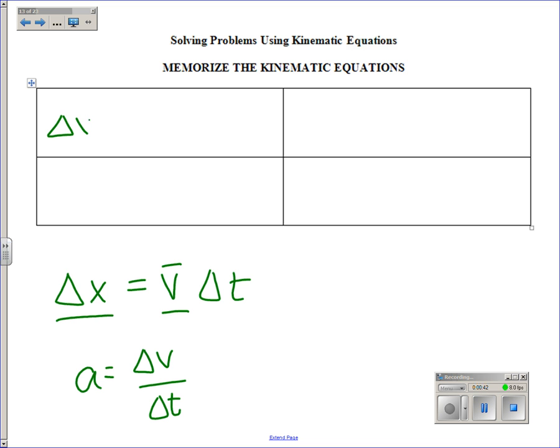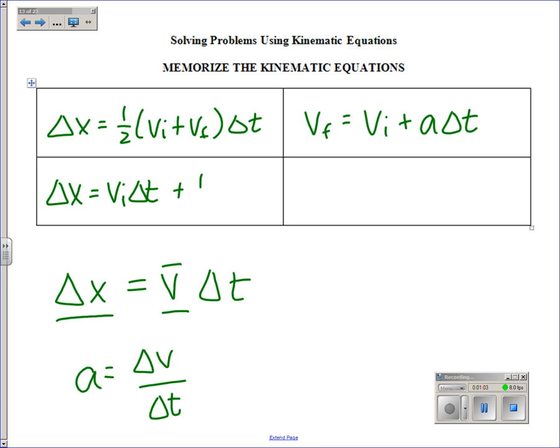Displacement equals average velocity times time. Final velocity equals initial velocity plus acceleration times time. Displacement equals initial velocity times time plus one-half a times time squared. And final velocity squared equals initial velocity squared plus 2a delta x.